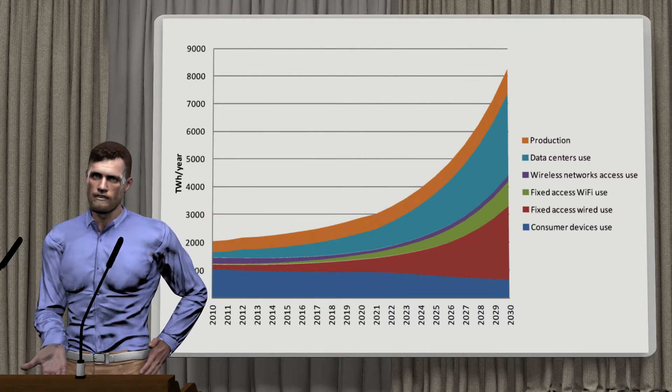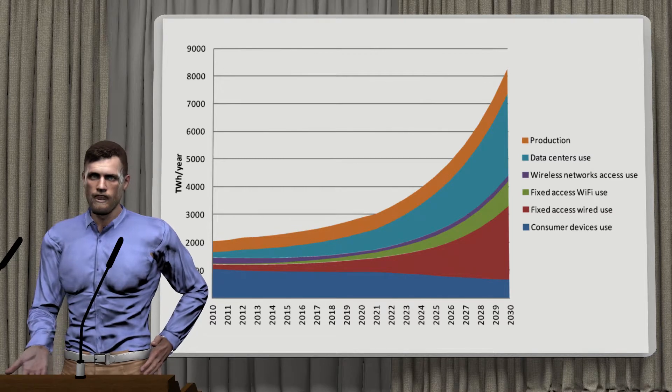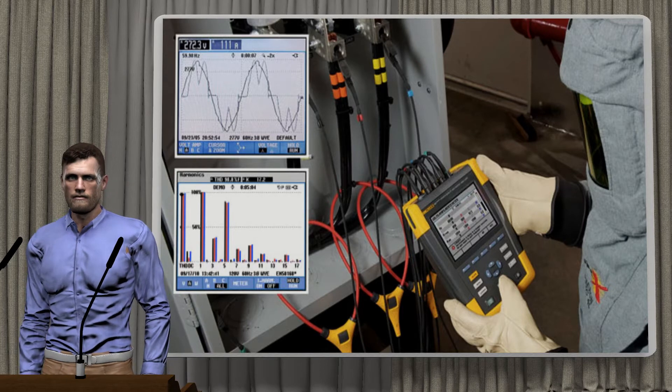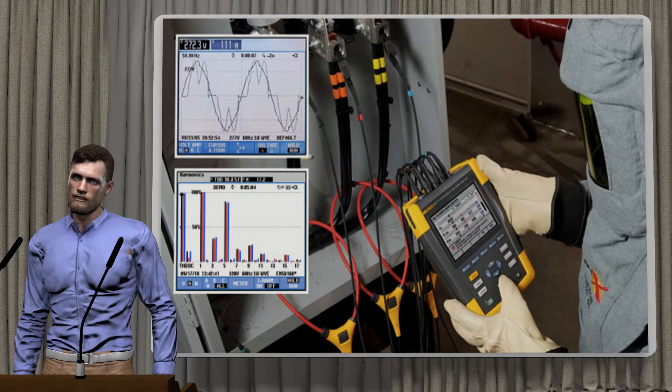Today, electricity moves the world. But all these changes that we see in our environment are leading to changes in the electric voltages and currents, which power all the equipment that make these changes possible.